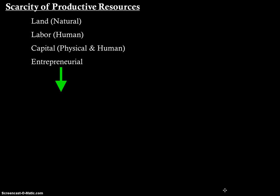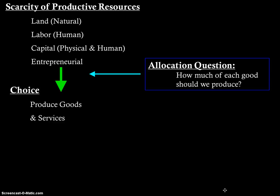Every good or service is made from these factors of production. Because these resources are scarce, we can't use them to make everything everyone wants, so we have to make choices. Every society has to choose how to use their productive resources and what goods and services to produce. This leads to three key questions of economics. The first is the allocation question: how much of each good should we produce, and how are we going to use our resources — how much to make of good A versus good B?